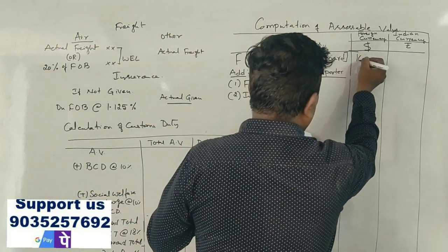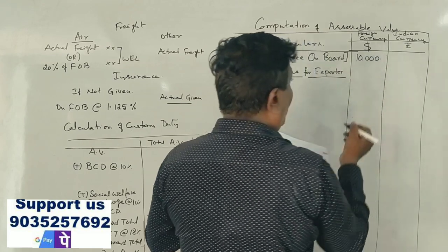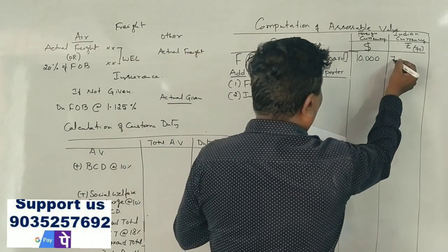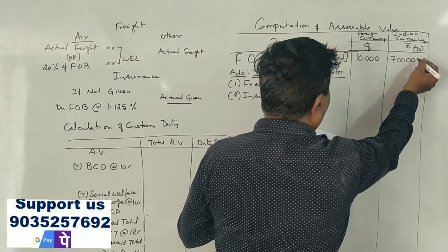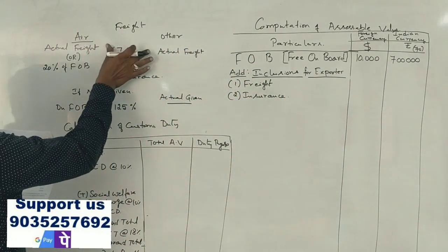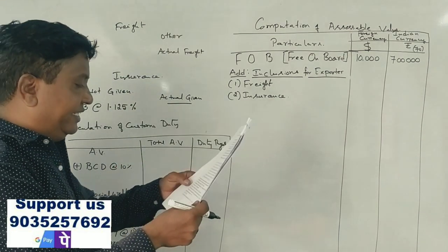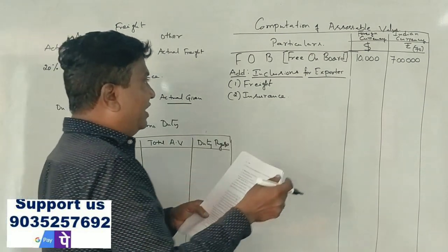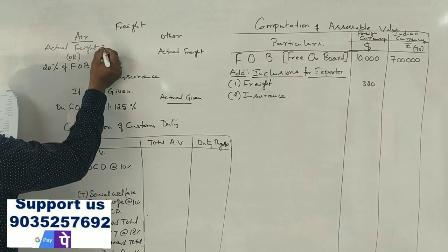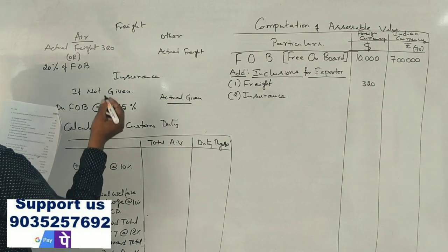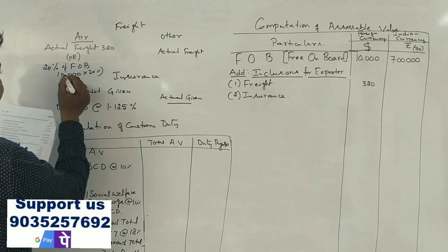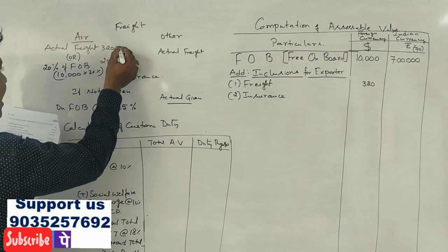FOB price is $10,000. Converting at the exchange rate of ₹70 per dollar. Packing charges $40, freight $320, insurance charges also added. We have $10,000 per dollar; at 20% as per rules that gives $2,000. Adding $100 and $320, that comes to $320. Total comes to $720.